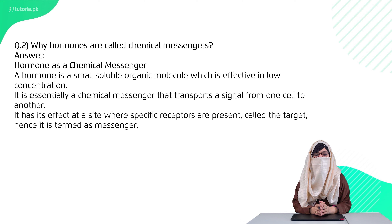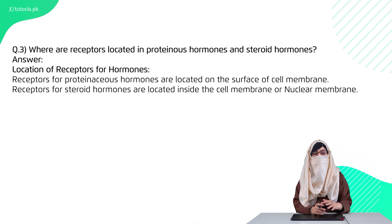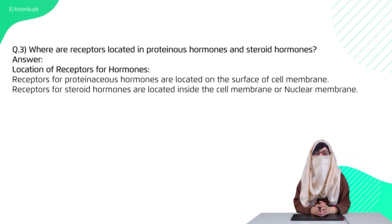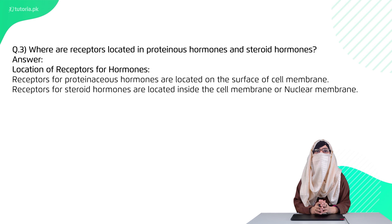Question three: why are receptors located differently for proteinaceous hormones and steroid hormones? Proteinaceous hormone receptors are present on the lipid bilayer, while steroid hormone receptors are present in the cytoplasm.